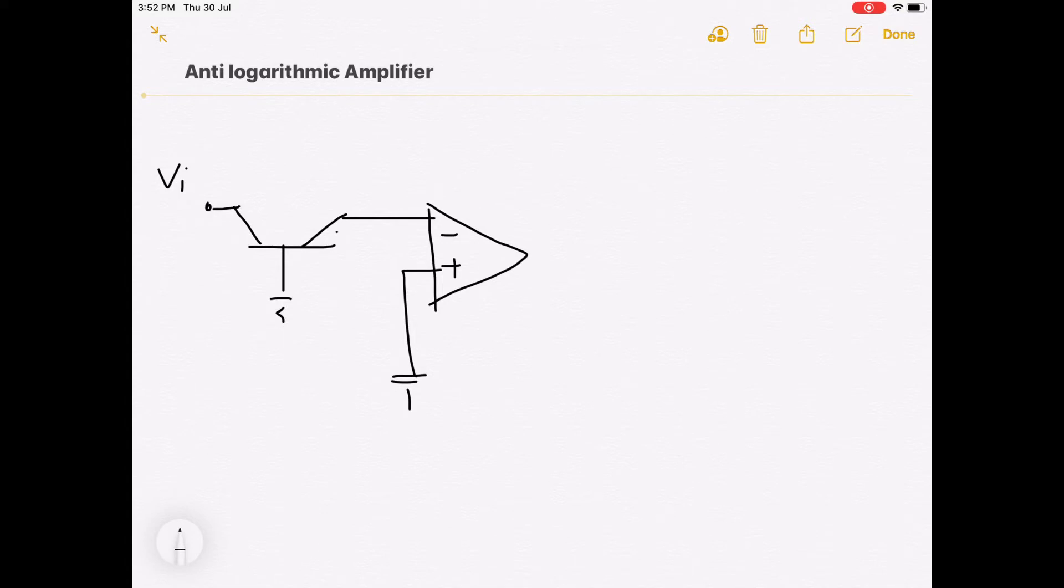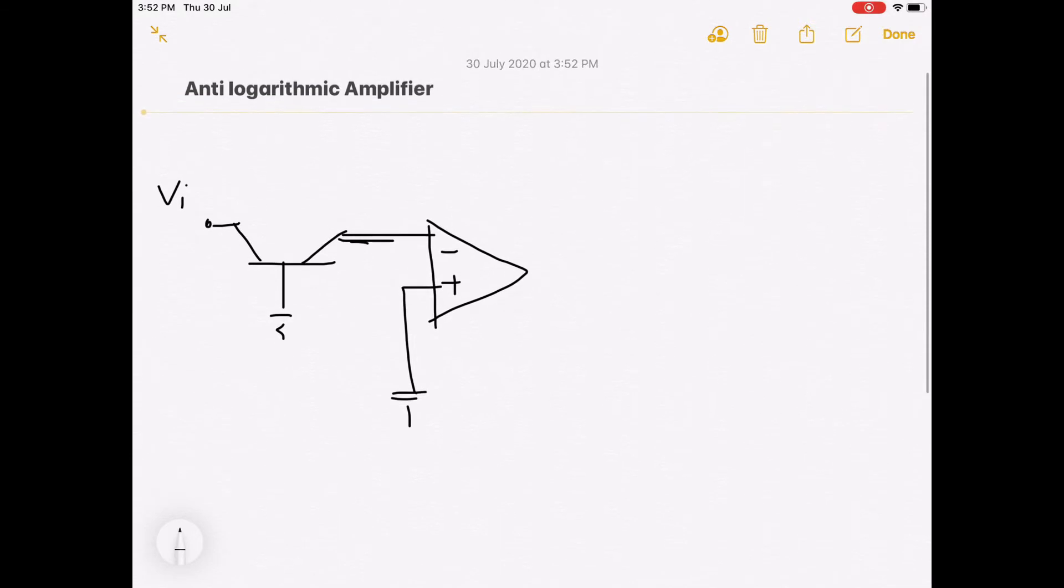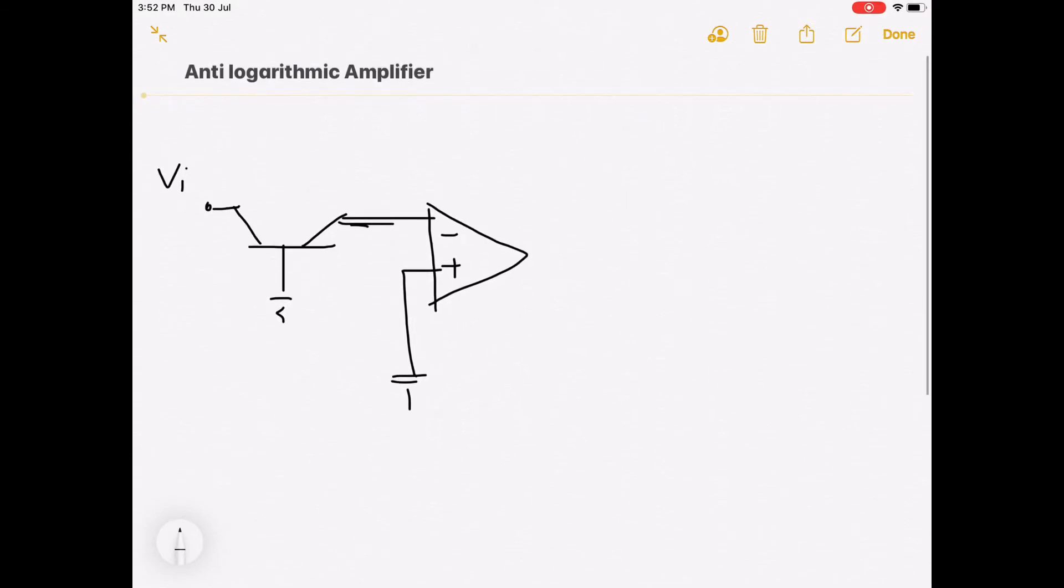Current flowing from this transistor will be Ii. This feedback resistor is RF. Here is Vo, and Ii current is flowing from RF also. In anti-log amplifier, the transistor is connected at the inverting input terminal with its base grounded.